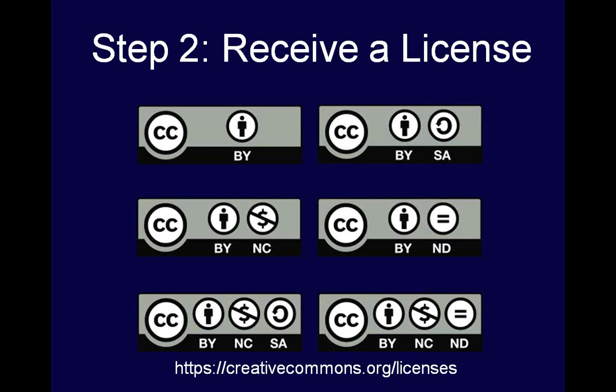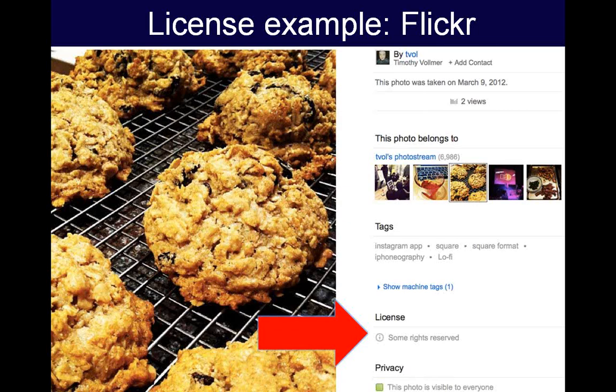As a specific example, I license my photos on Flickr under the Creative Commons Attribution License, CC BY. This means that I grant permission in advance for anyone anywhere in the world to copy, to share, and to adapt my photos, even for commercial purposes, as long as they give me credit as the original author.